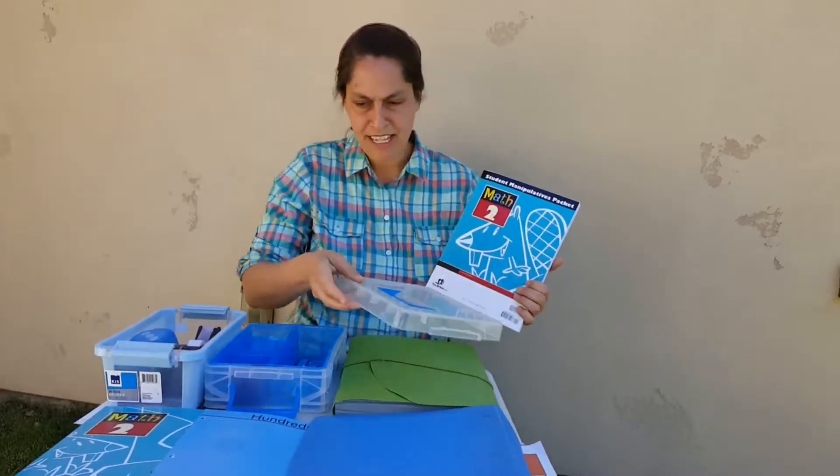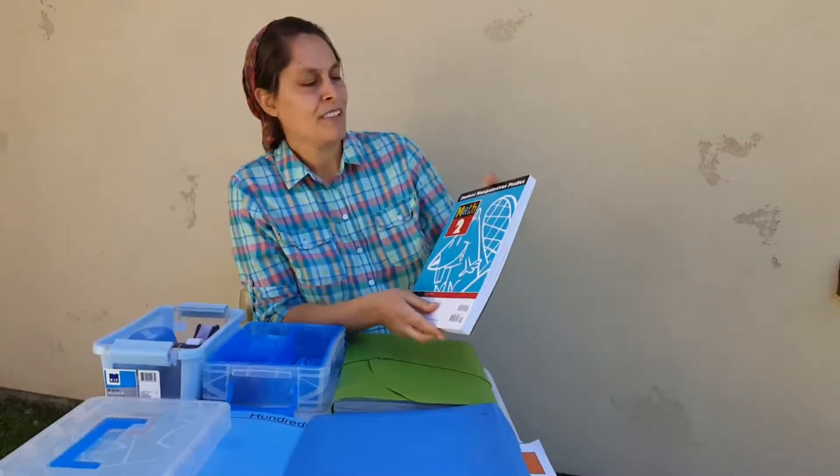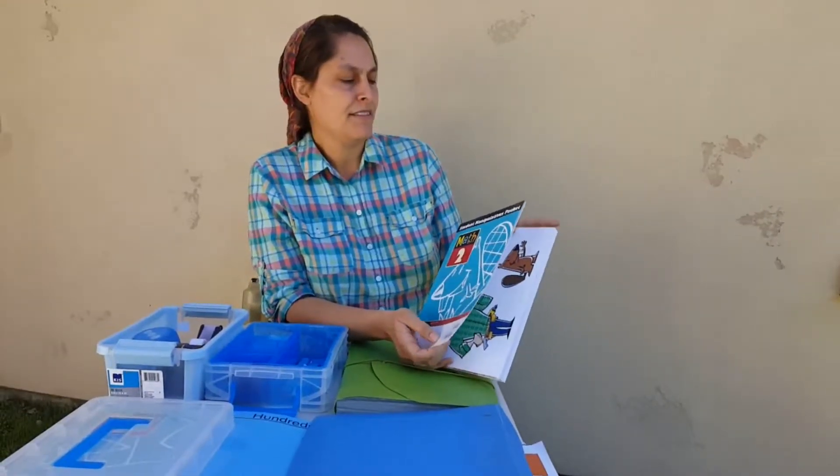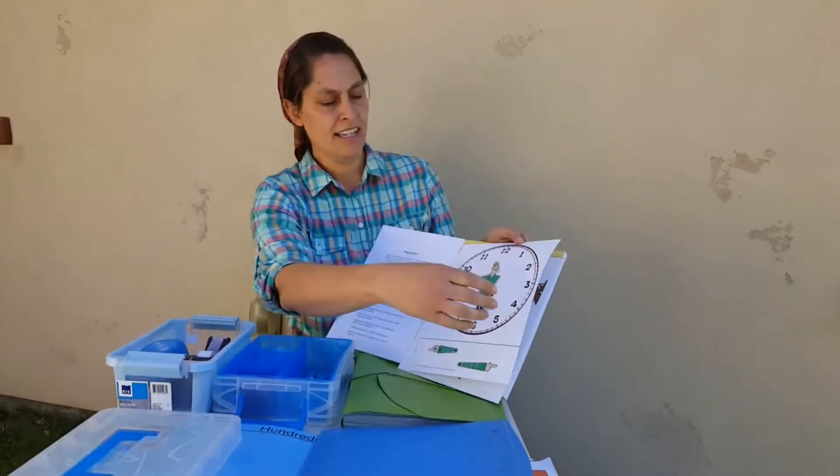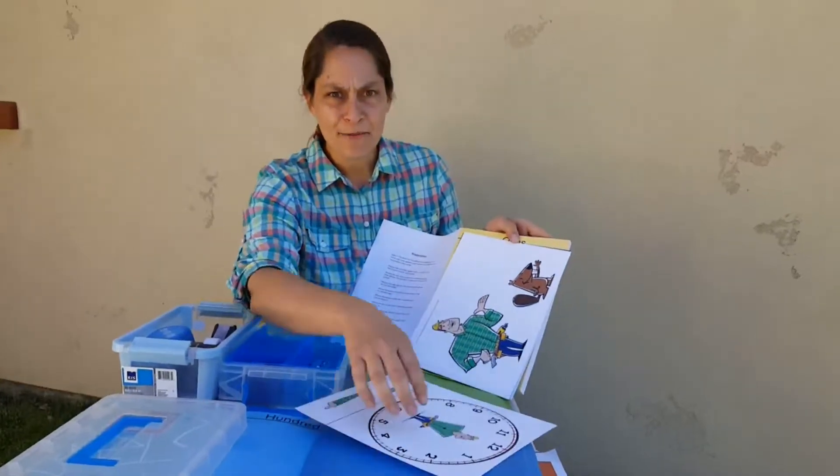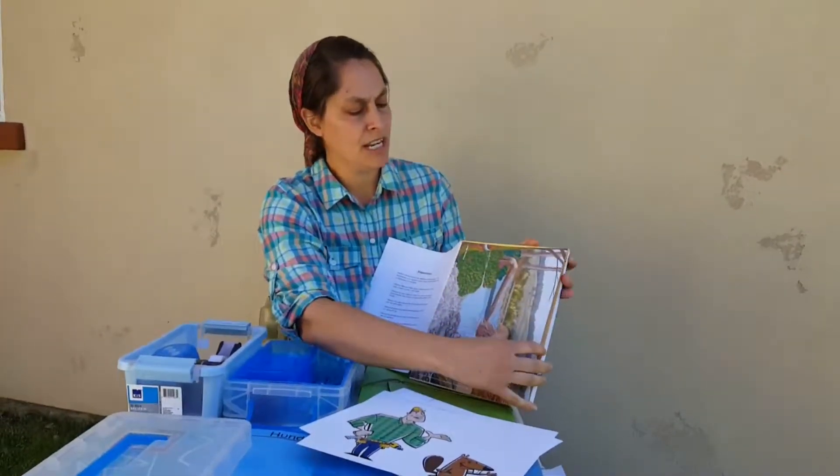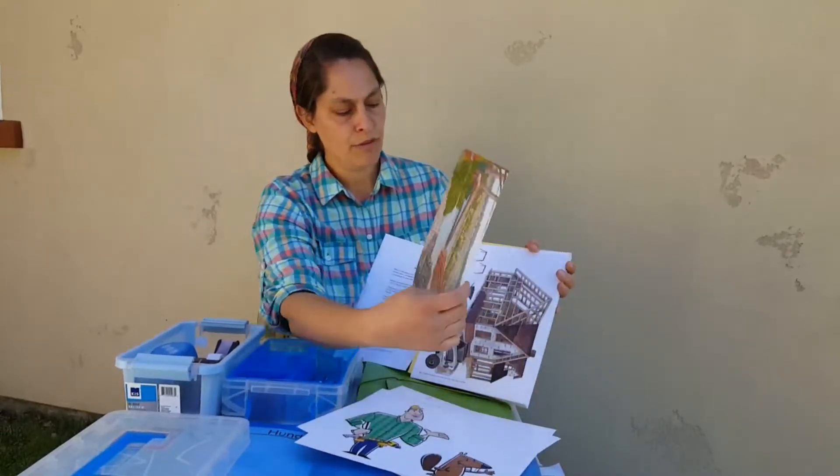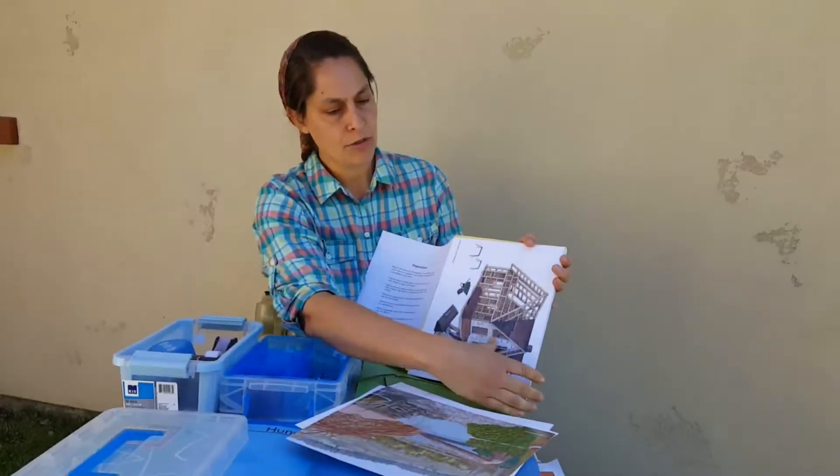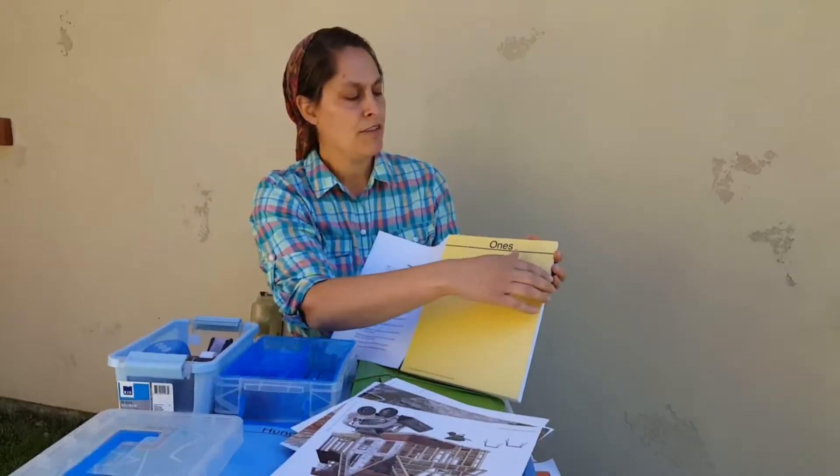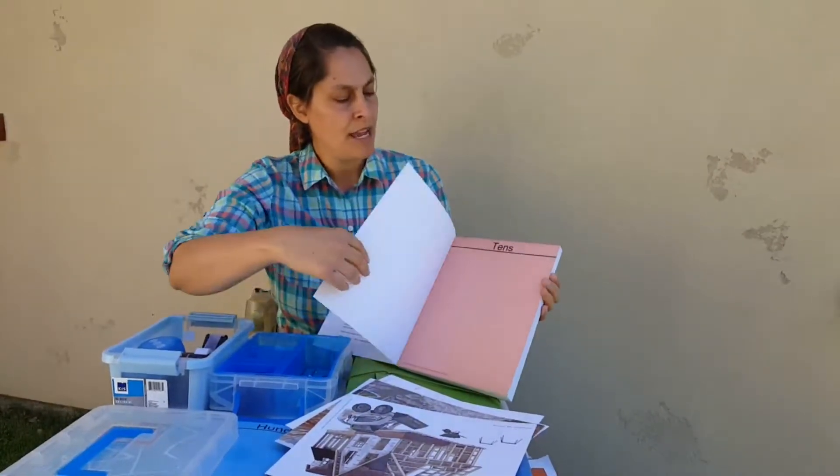Let me show you what comes in this manipulative packet. It is packed with all kinds of stuff. We've got the clock. My children love helping assemble these, punch them out and organize them. I'll show you in just a minute how we do all of that. We've got work mats, construction work mats, we've got the place value mats. Those are very important.